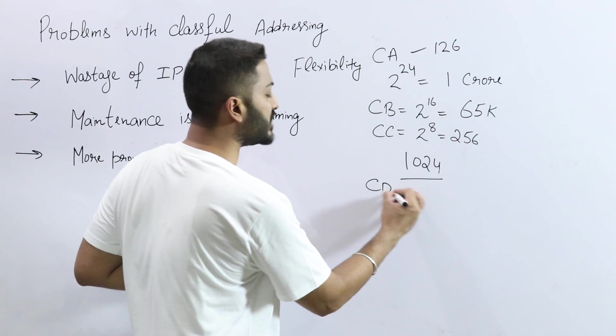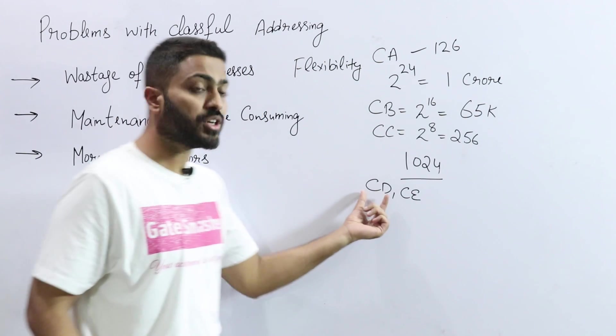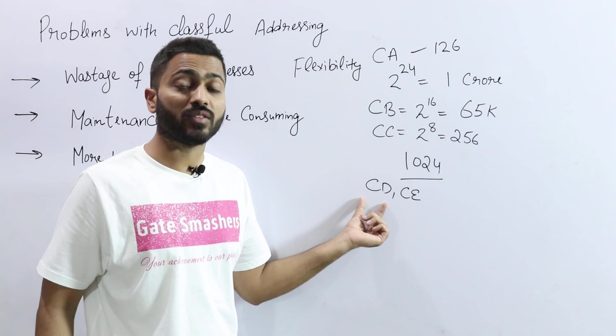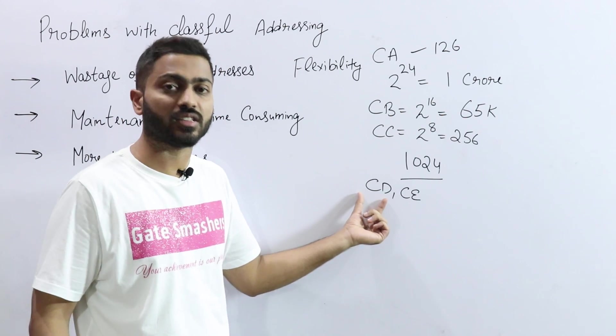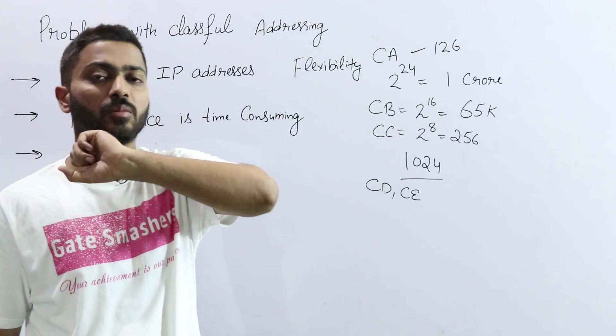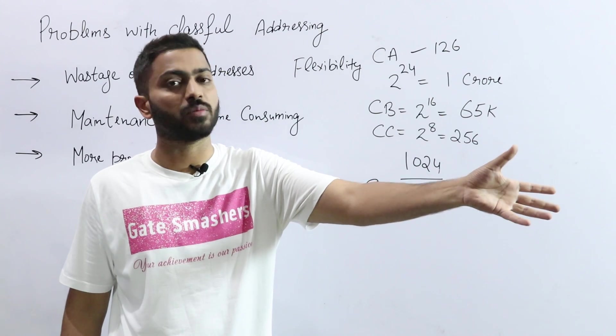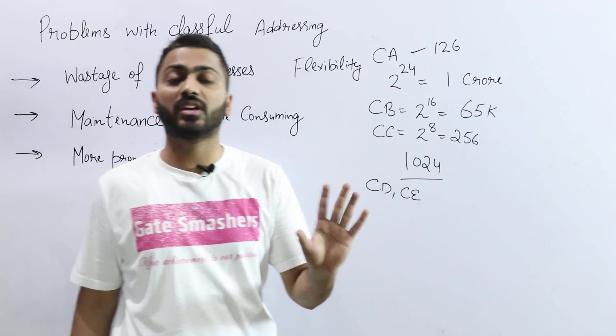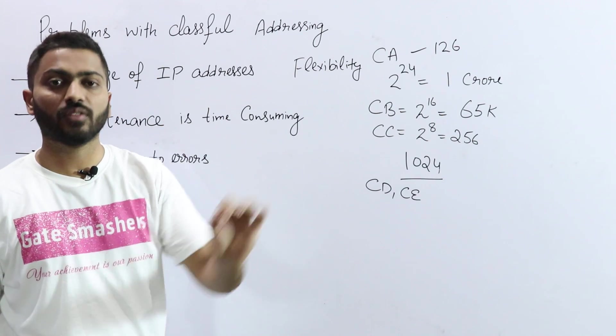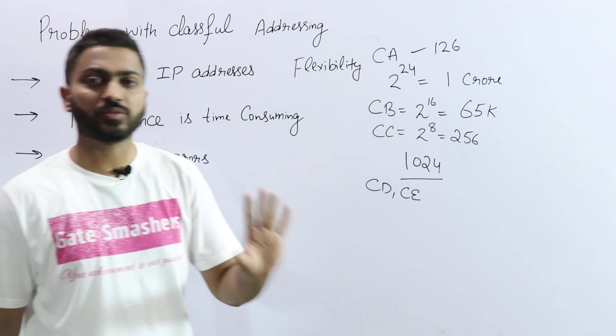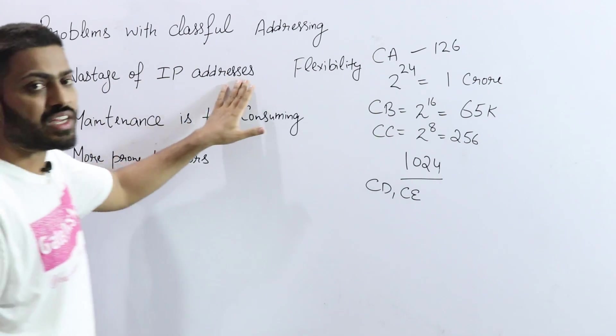If I talk about class D or class E, in class D there are 2 raised to power 28 IP addresses that are wasted because of multicasting. And in class E also, 2 raised to power 28 hosts are reserved for future purpose. So nearly 500 crore numbers are already reserved or wasted. So the biggest problem in classful addressing is wastage of IP addresses.